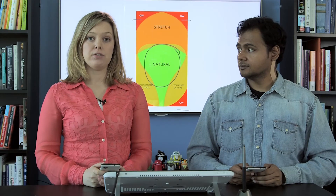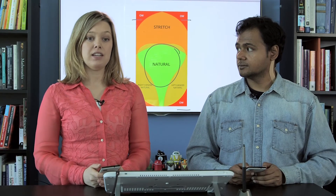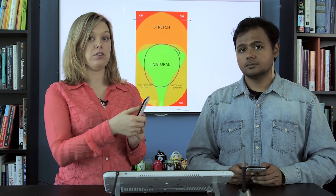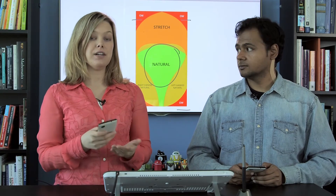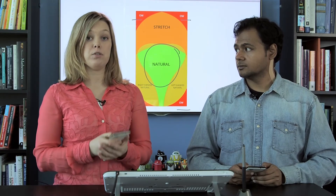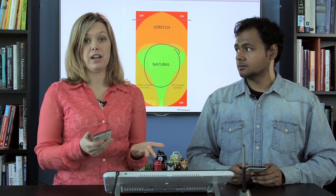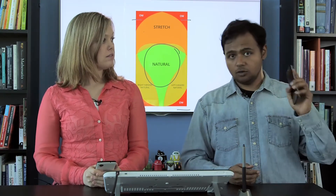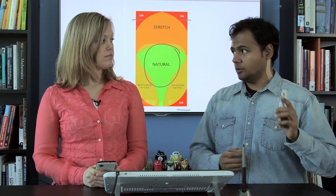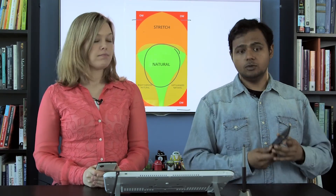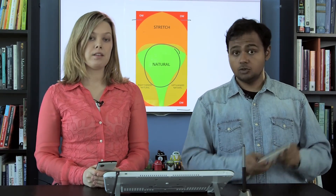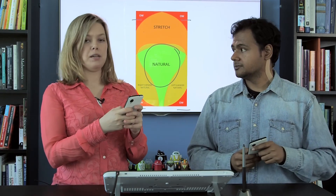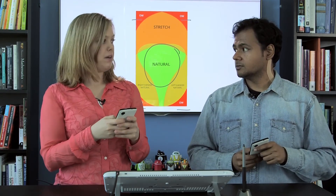Take out your smartphone and see if you can identify where the natural zones are and where the out zones are for you. This varies depending on what phone you have and how big your hand is. One-handed use is not the only way to hold your phone — there's also two-handed use, like when you're sending an IM or text to somebody.